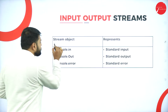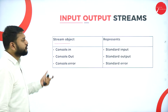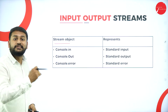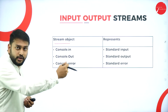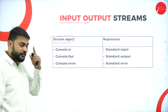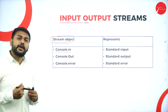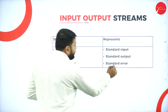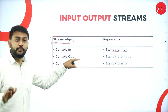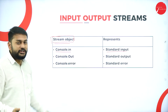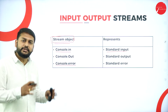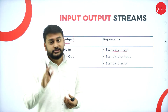Why should I have input-output stream classes? Stream means you are continuously sending data one by one — that is what I call a stream. The different stream objects I have are: console.In for standard input, console.Out for standard output, and console.Error for standard error. These are the three different stream objects you need to remember.